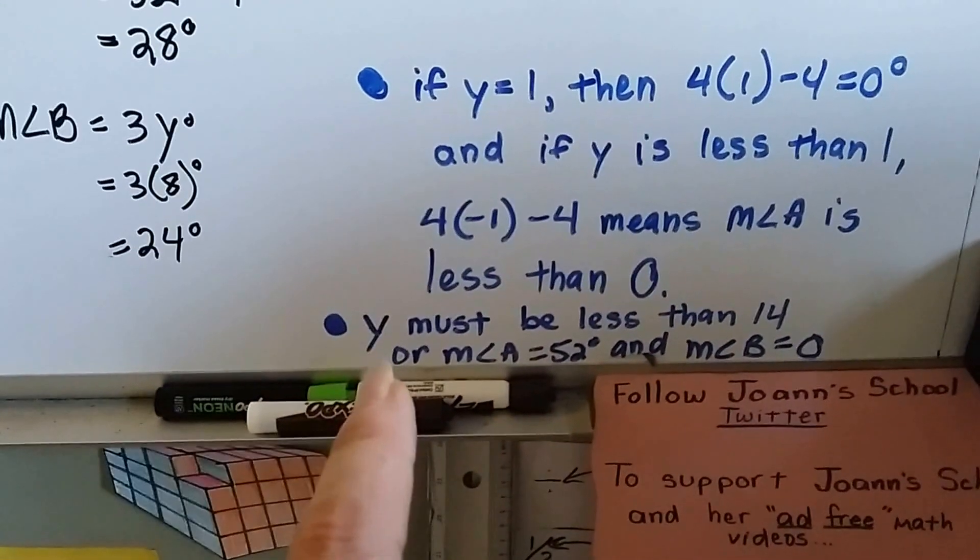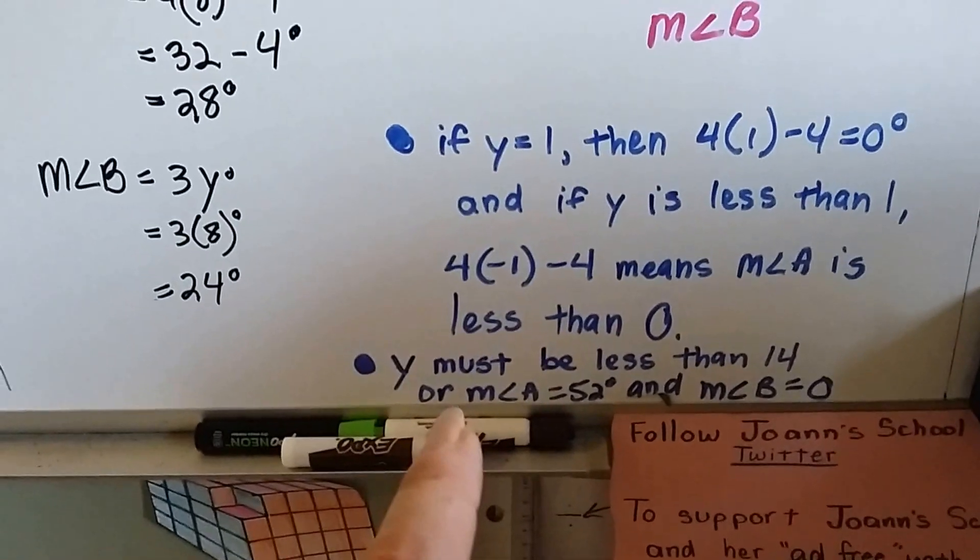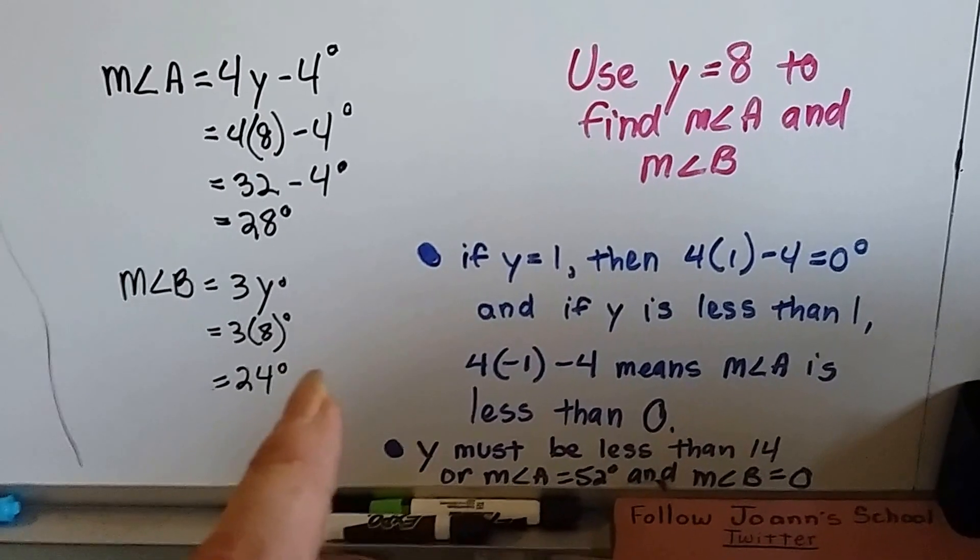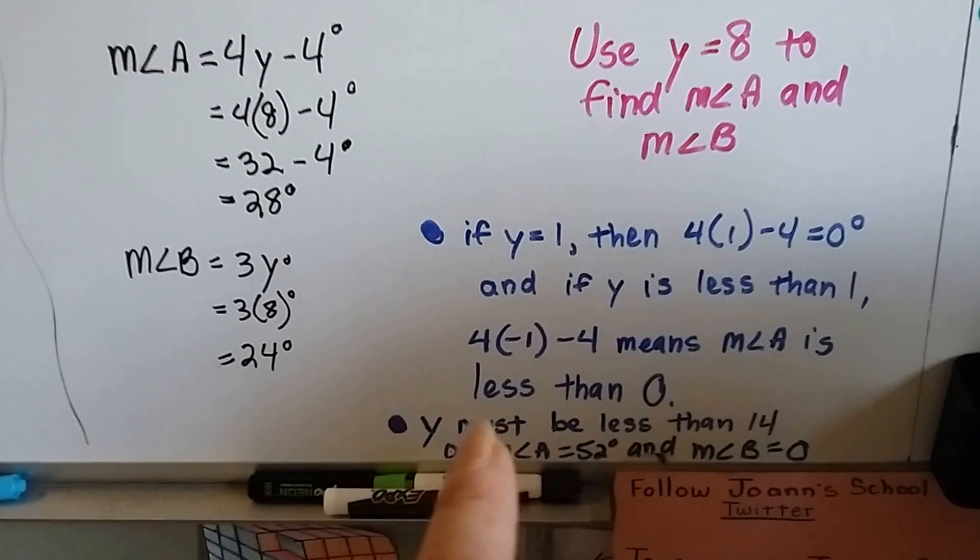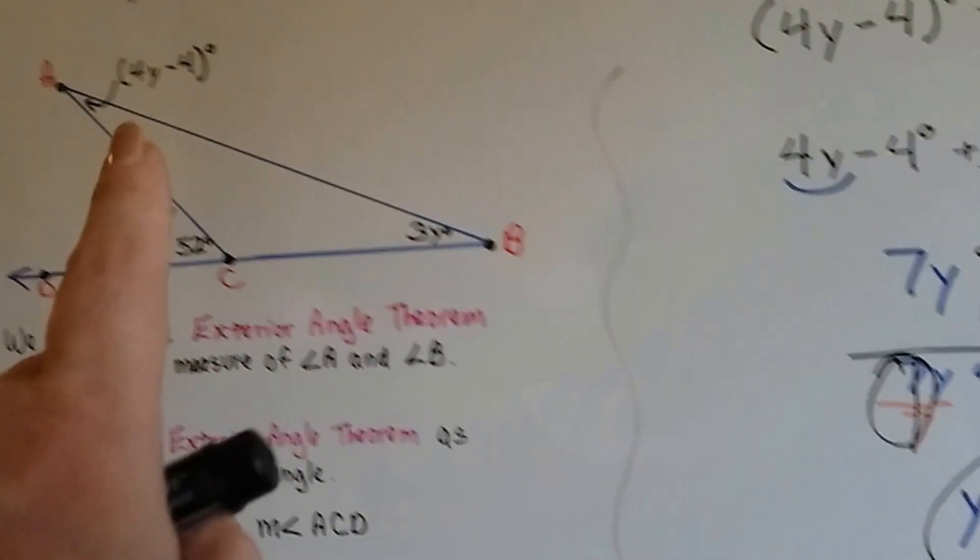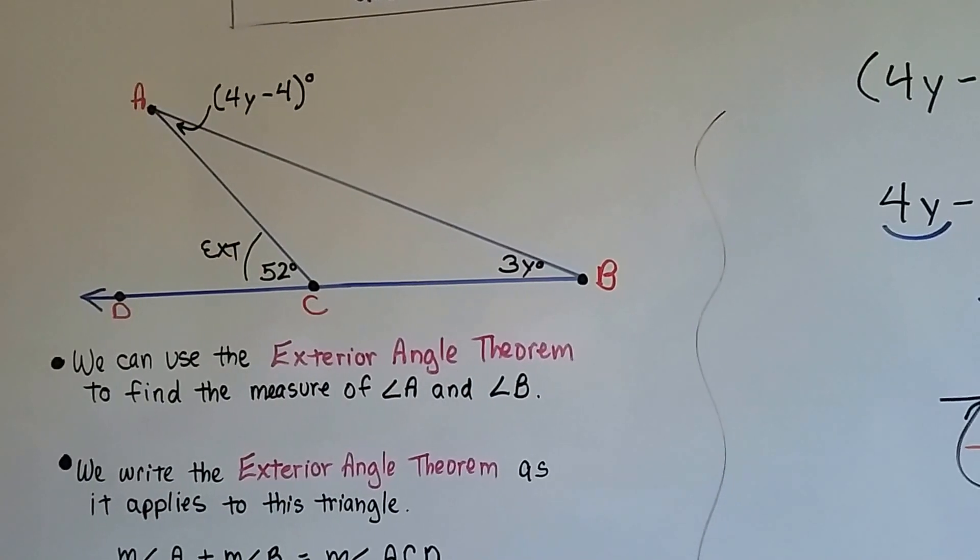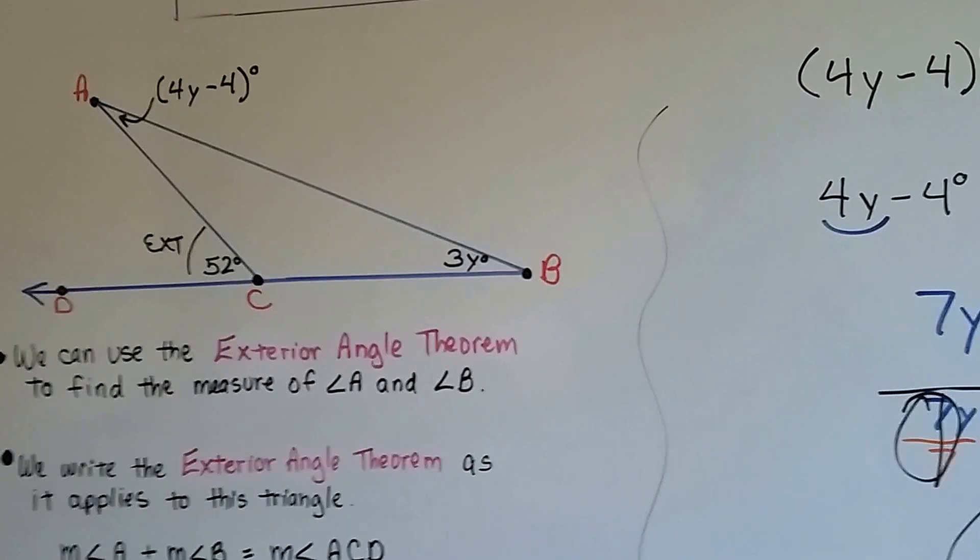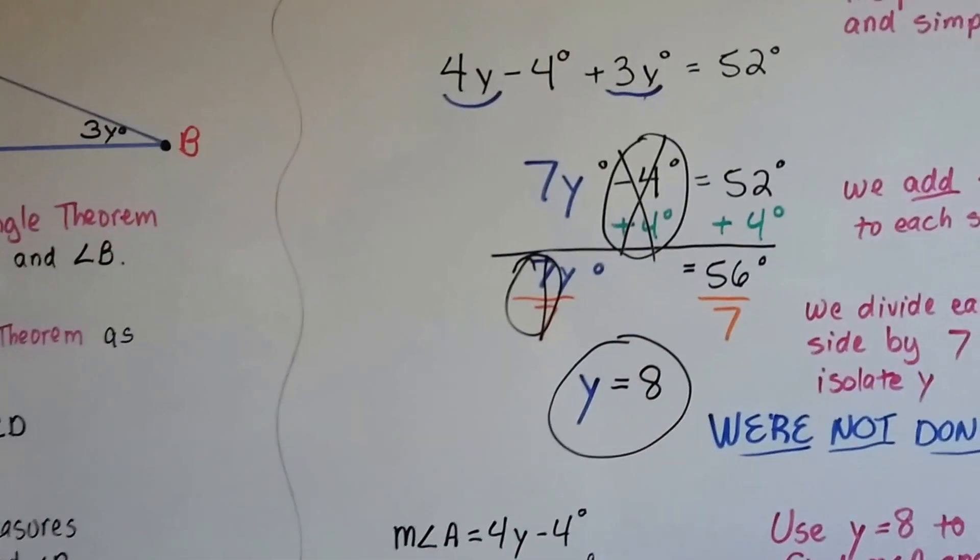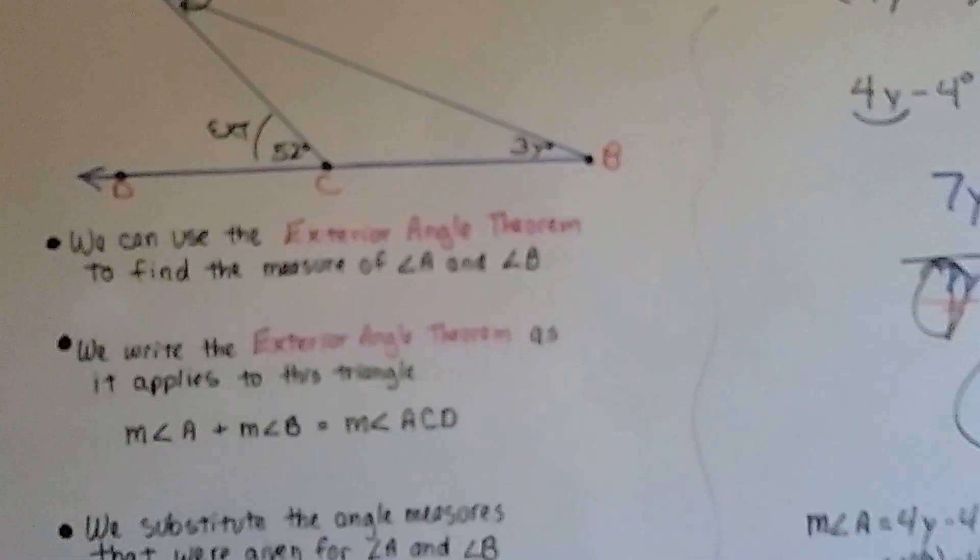We also know that y must be less than 14, because if we multiply it by 14, we end up getting a 52. And if this is a 52, then that means that's a 0. And we know the measure of angle B is not a 0. So we know it's greater than 1 and less than 14, and it turned out to be 8 right in the middle. It worked out perfectly.